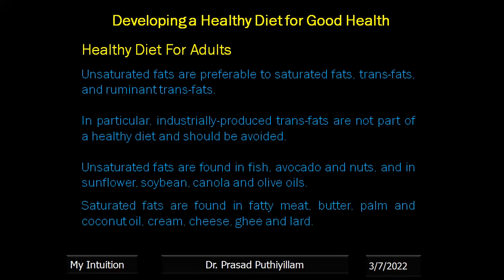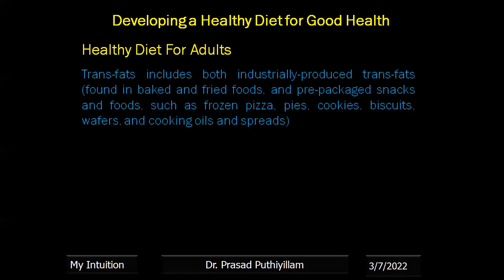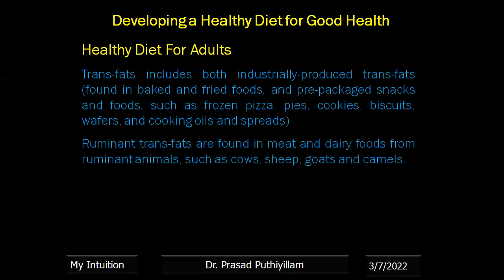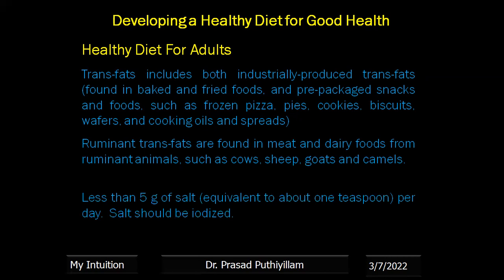Saturated fats are found in fatty meat, butter, palm and coconut oil, cream, cheese, ghee, lard, etc. Trans fats include both industrially produced trans fats found in baked and fried food, prepackaged snacks such as frozen pizza, pies, cookies, biscuits, wafers, cooking oil and spreads. Ruminant trans fats are found in meat and dairy food from ruminant animals such as cows, sheep, goat and camels.